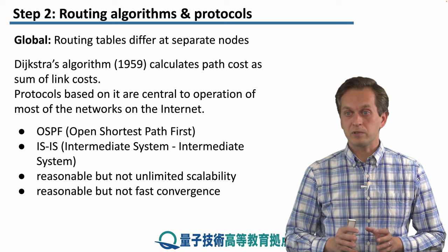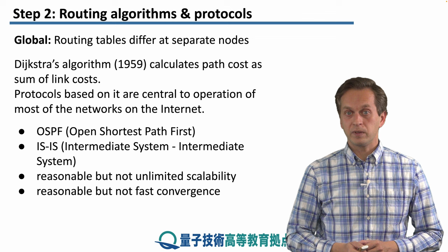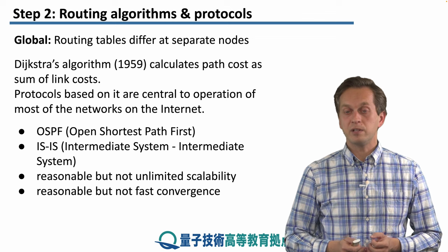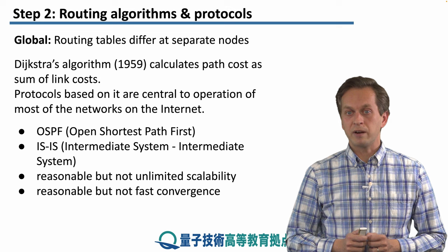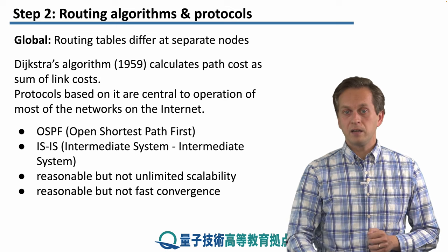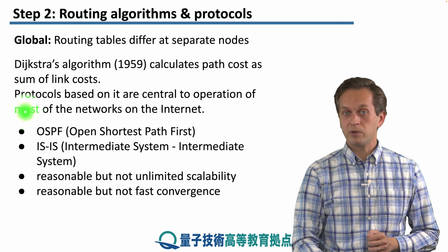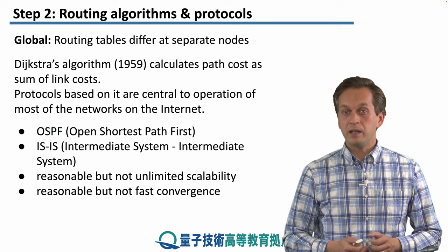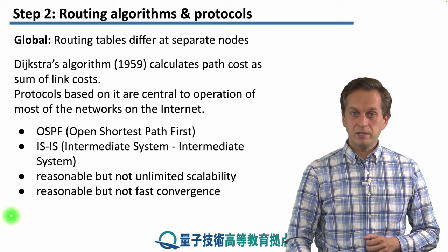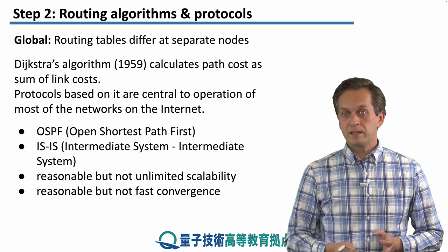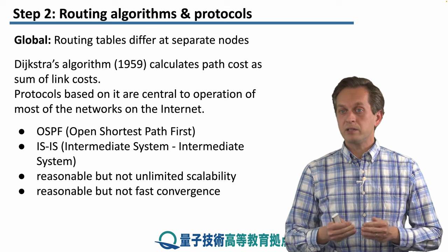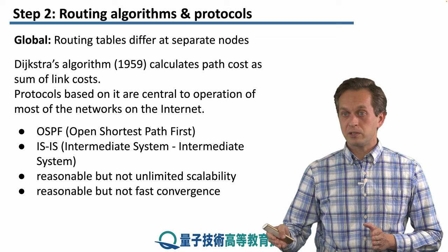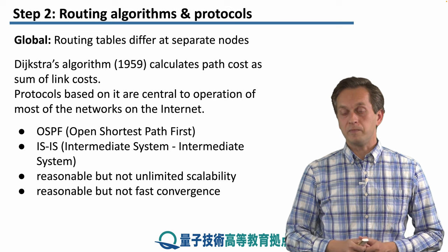One of the most famous global routing algorithms is the Dijkstra algorithm, introduced in 1959. It calculates the path cost as the sum of link costs. Protocols based on this algorithm are central to most networks on the internet — very famous ones include OSPF (Open Shortest Path First) and IS-IS (Intermediate System to Intermediate System). The scalability of these protocols is reasonable but not unlimited, and their convergence is not that fast. Convergence means: if a dynamic change occurs in the network, how long does it take for this information to propagate to all nodes so they can make up-to-date decisions.